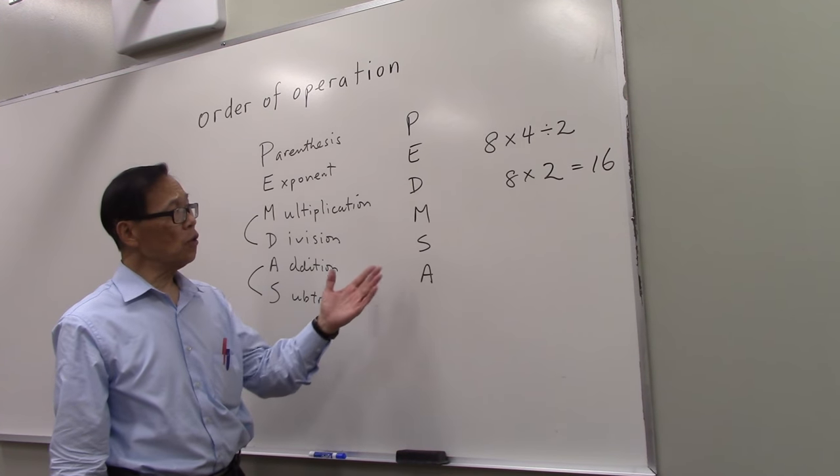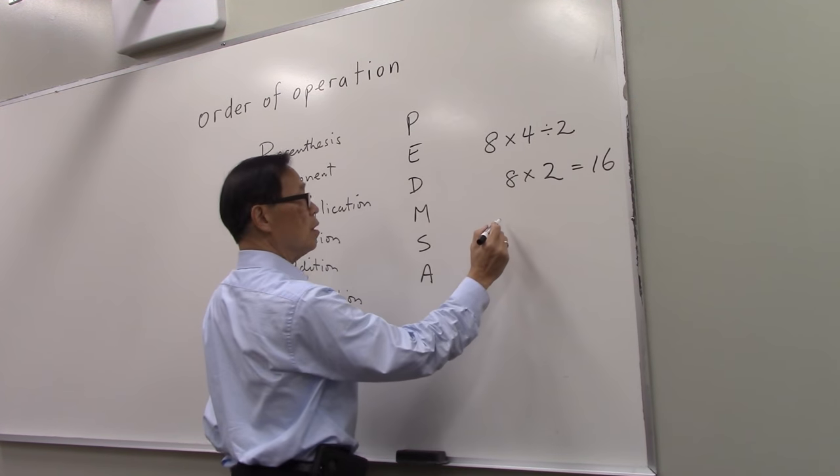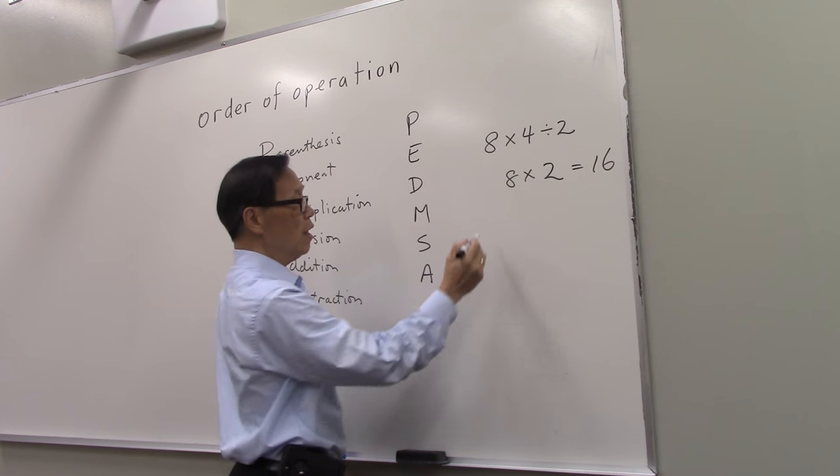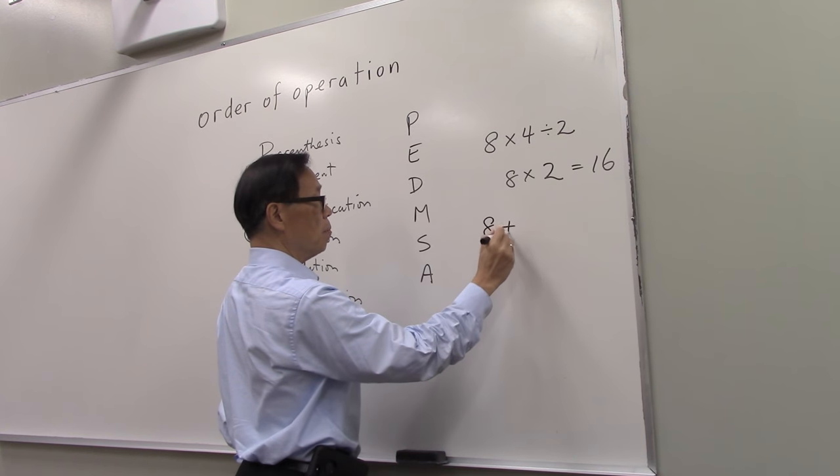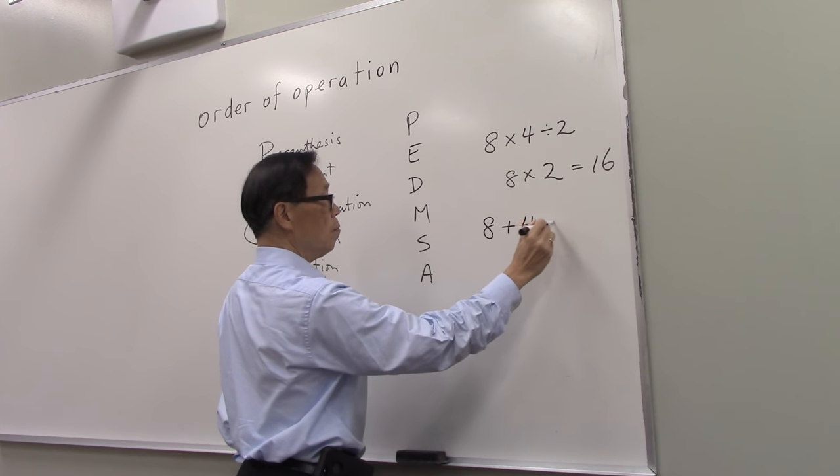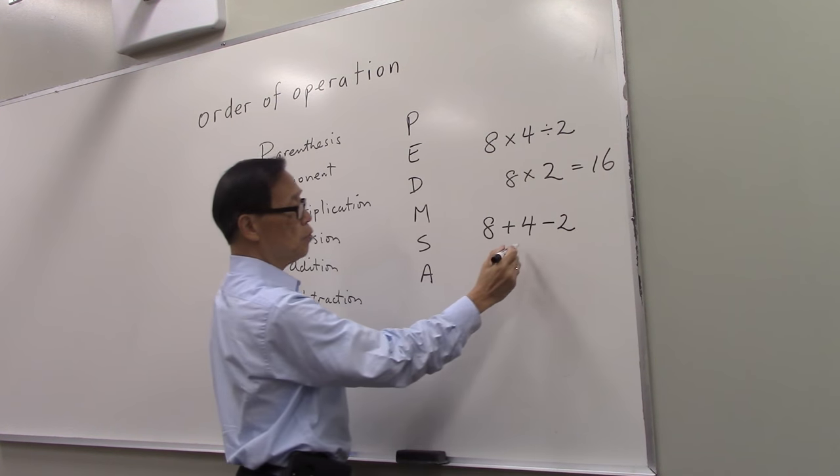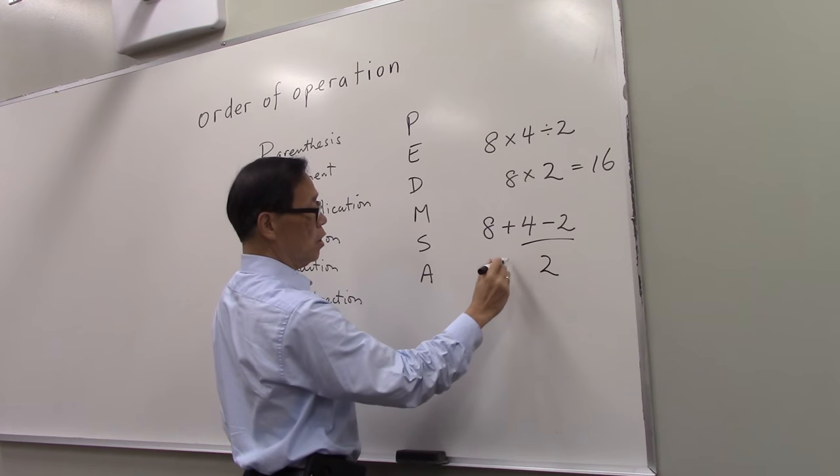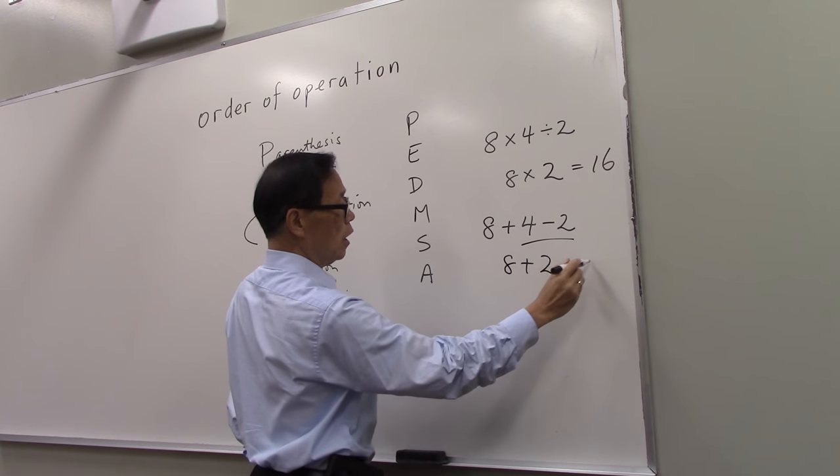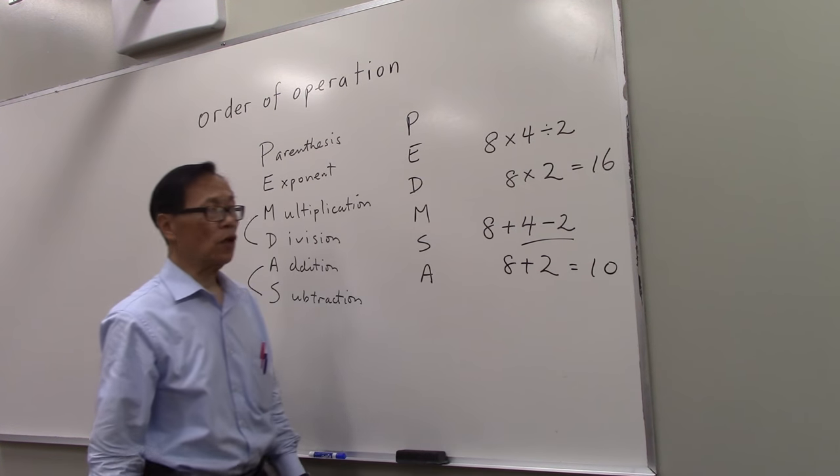And also applies to subtraction. If you had 8 plus 4 minus 2, you would subtract first. And then you would add. And this will always be the correct answer.